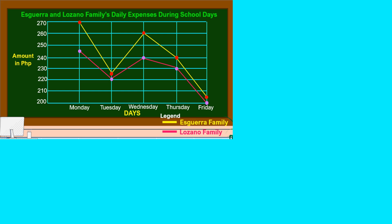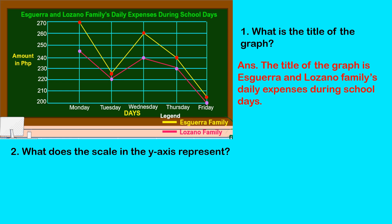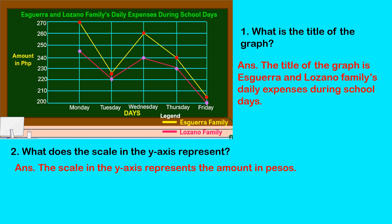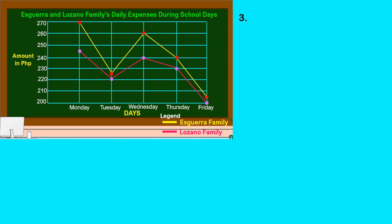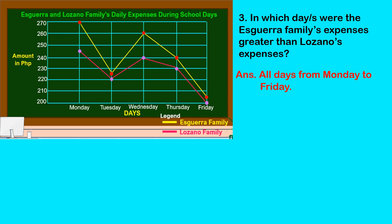How do we interpret the graph? We answer some questions. Our first question: What is the title of the graph? The title is Sguera and Luzano Family's Daily Expenses During School Days. Next question: In which day or days were the Sguera family's expenses greater than Luzano's expenses? The answer is all days from Monday to Friday.